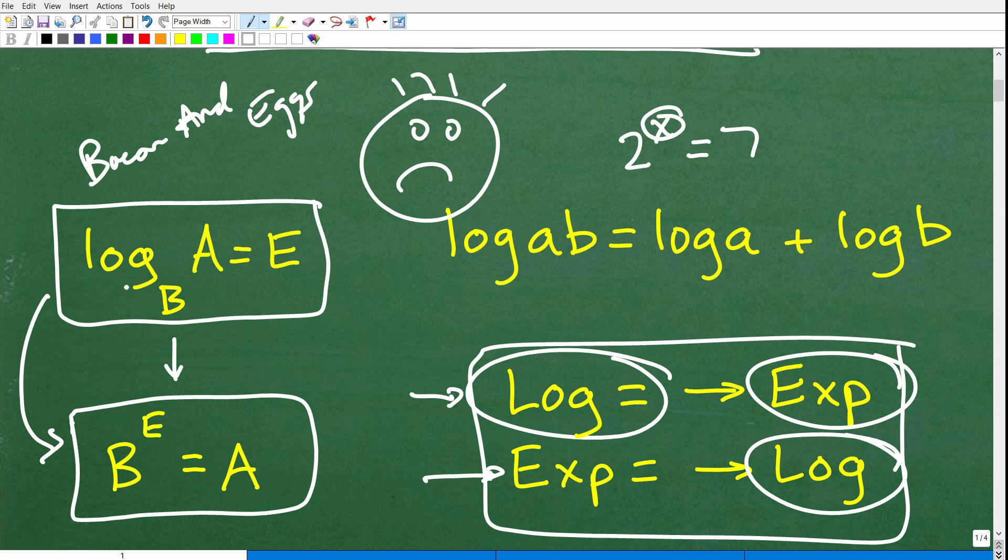When you have a logarithmic expression or equation written out, log, you have some stuff here equal to some other stuff. This little B number down here, this subscript, that's the base. This is the answer, and this little E is the exponent. So you can kind of think of this as bacon and eggs, B-A-E.